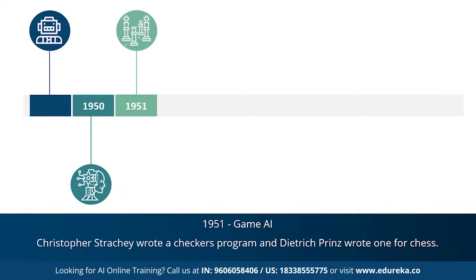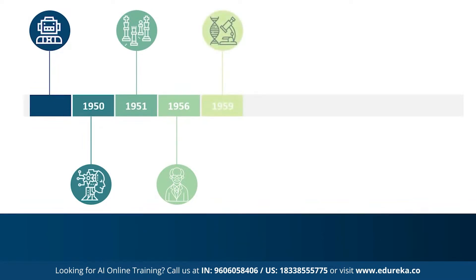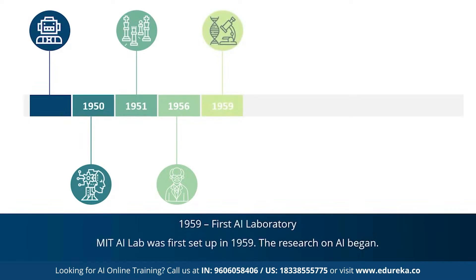Those early programs were later rewritten and improved. 1956 marked the most important year for AI, when John McCarthy first coined the term artificial intelligence. This was followed by the first AI laboratory, the MIT AI Lab, set up in 1959 and dedicated to AI research.